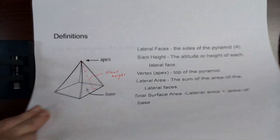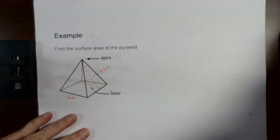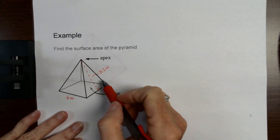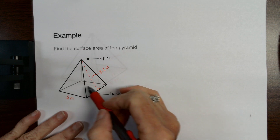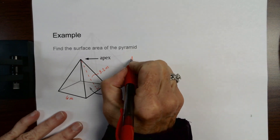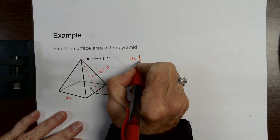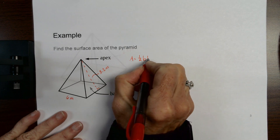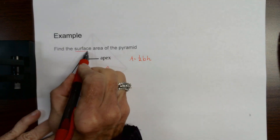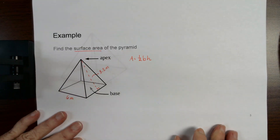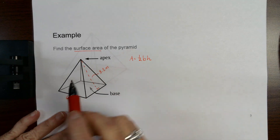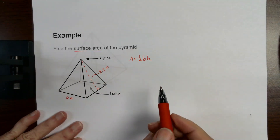Let's do a couple of examples. You can use your calculator on this. Notice how each of the sides of this pyramid is a triangle. The area of a triangle is one half the base times the height. This problem is asking for total surface area, so it's the area of the lateral faces plus the area of the base.